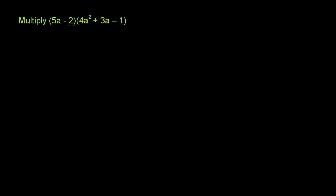Multiply 5a minus 2 times 4a squared plus 3a minus 1. Here we're multiplying a binomial by a trinomial, so the FOIL tool will not work here. It would only work if you were multiplying a binomial times another binomial.